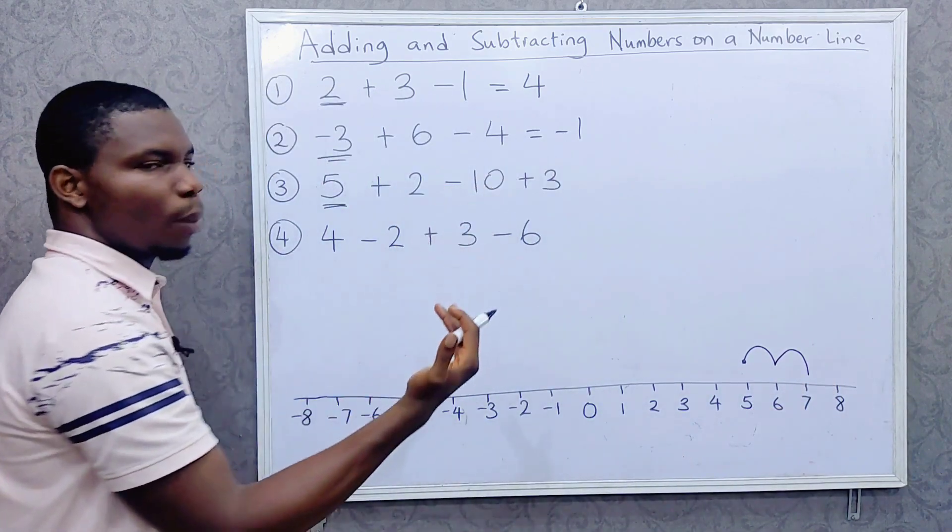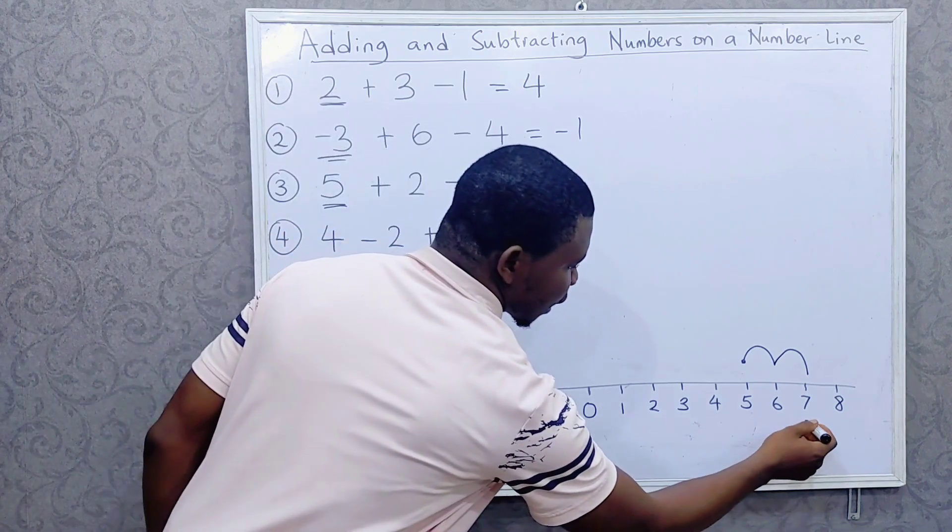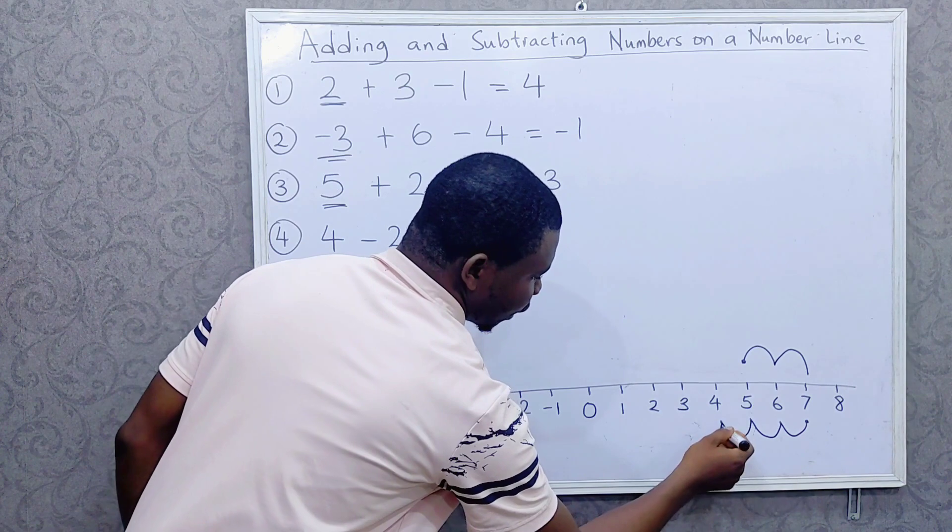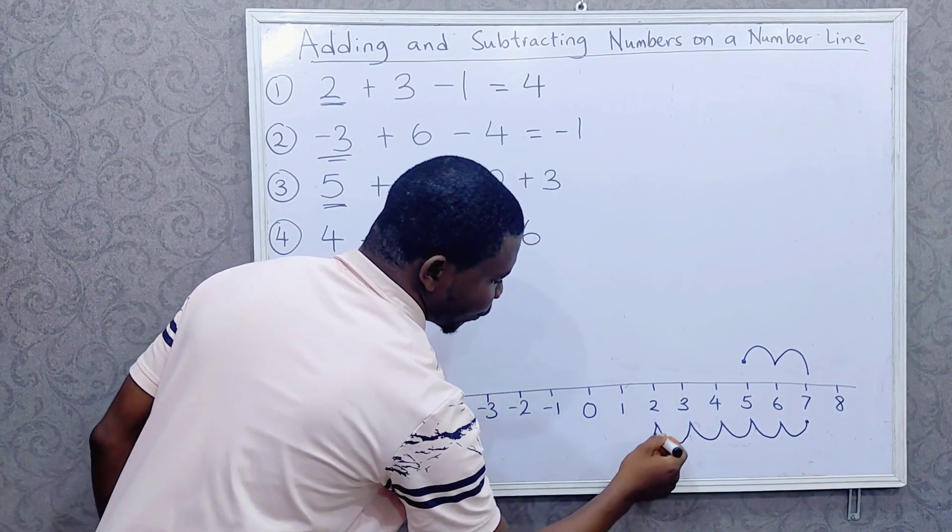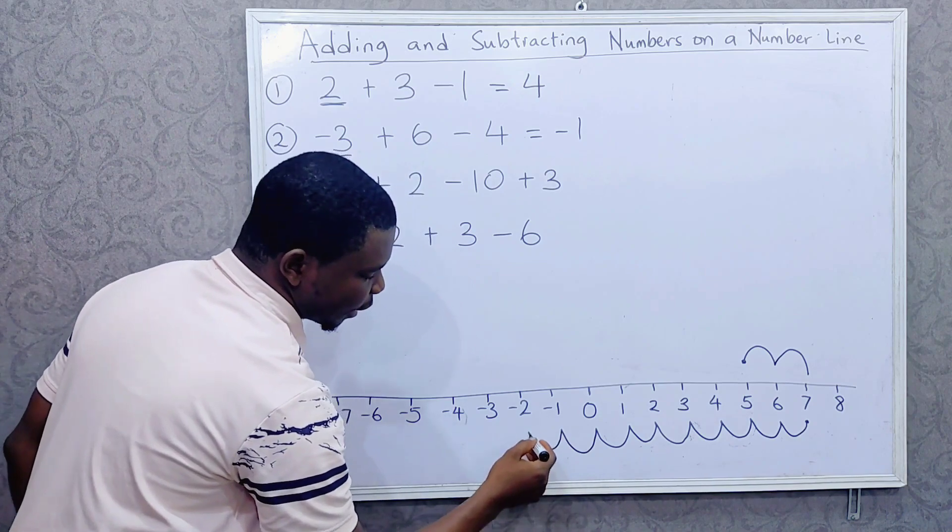10 times. So we are at 7: 1, 2, 3, 4, 5, 6, 7, 8, 9, 10.